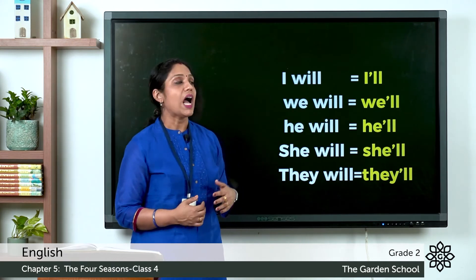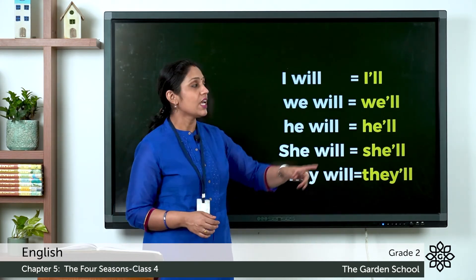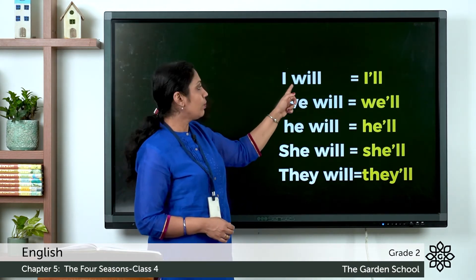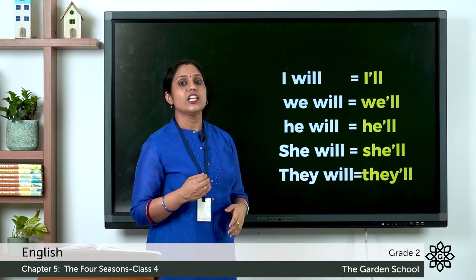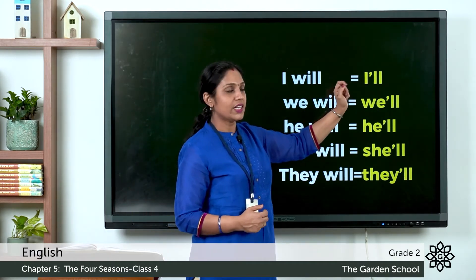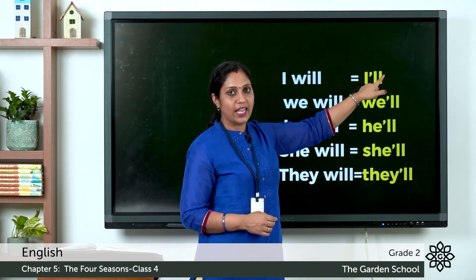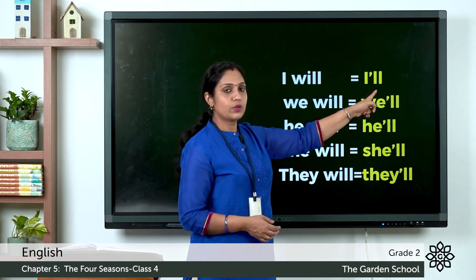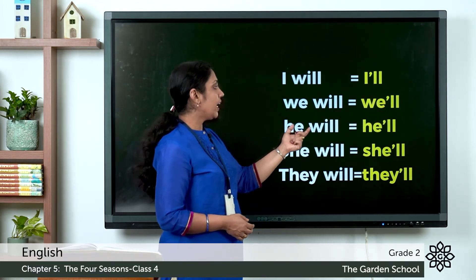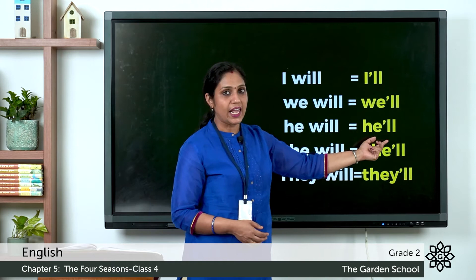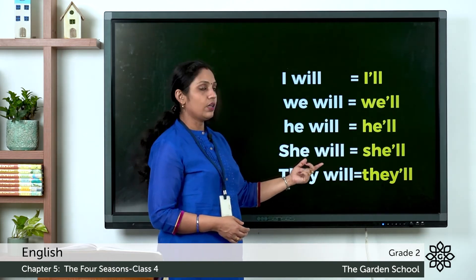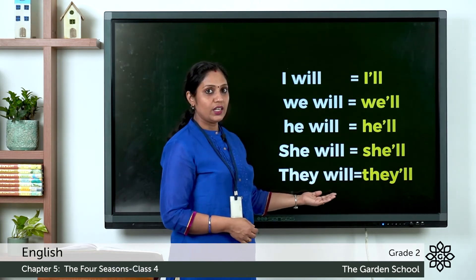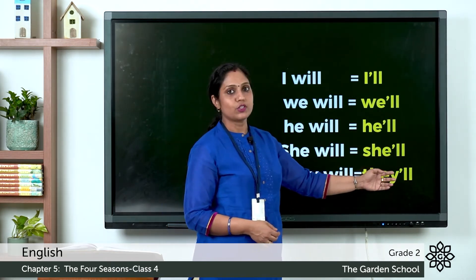I will is written as I'll — I apostrophe L-L — where W-I from 'will' is missing. We will becomes we'll, he will becomes he'll, she will becomes she'll, and they will becomes they'll.